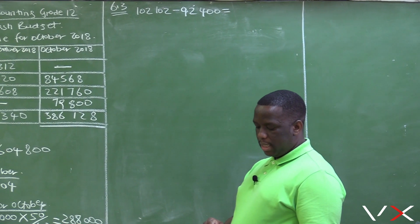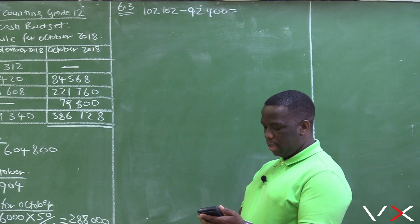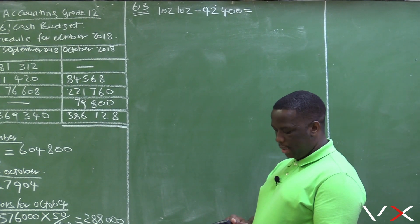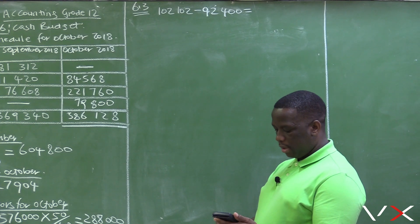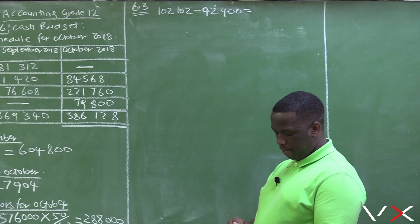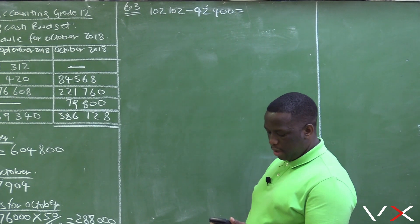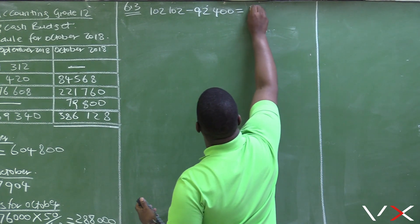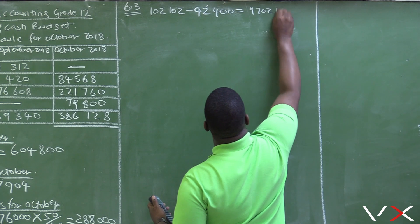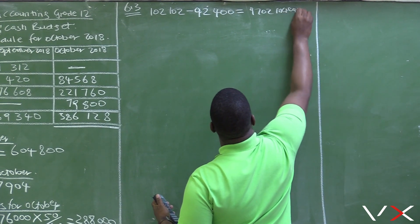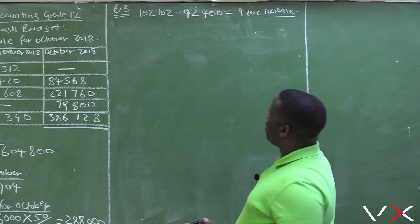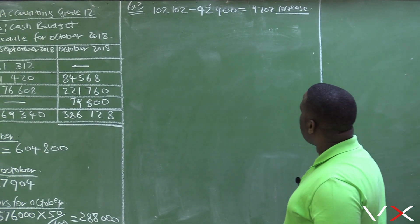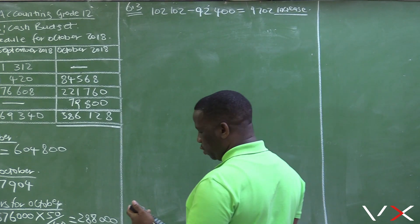The salaries for sales assistants in October is $102,120, and in September it was $92,400. That gives us an increase of $9,702. According to our budget, we are budgeting to increase the salaries of the sales assistants by $9,702.